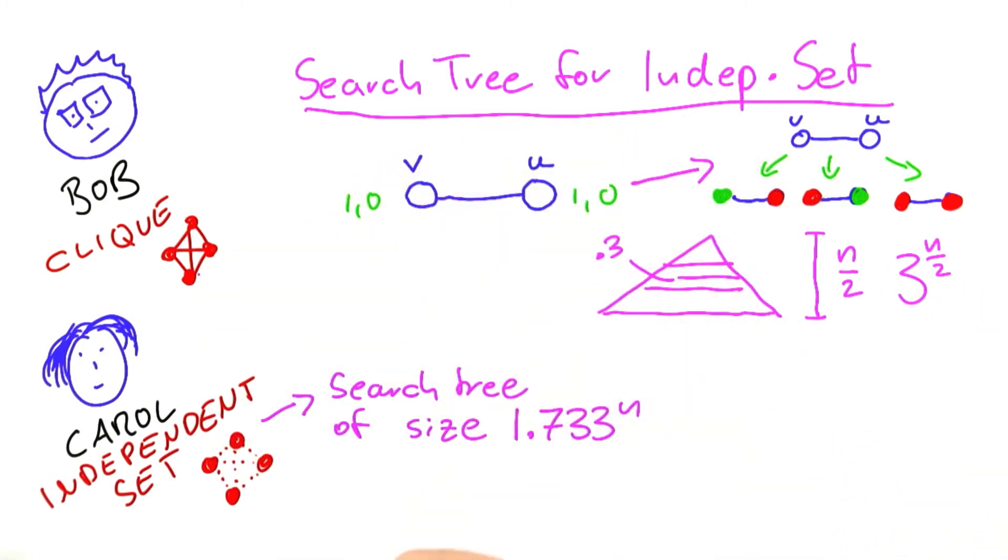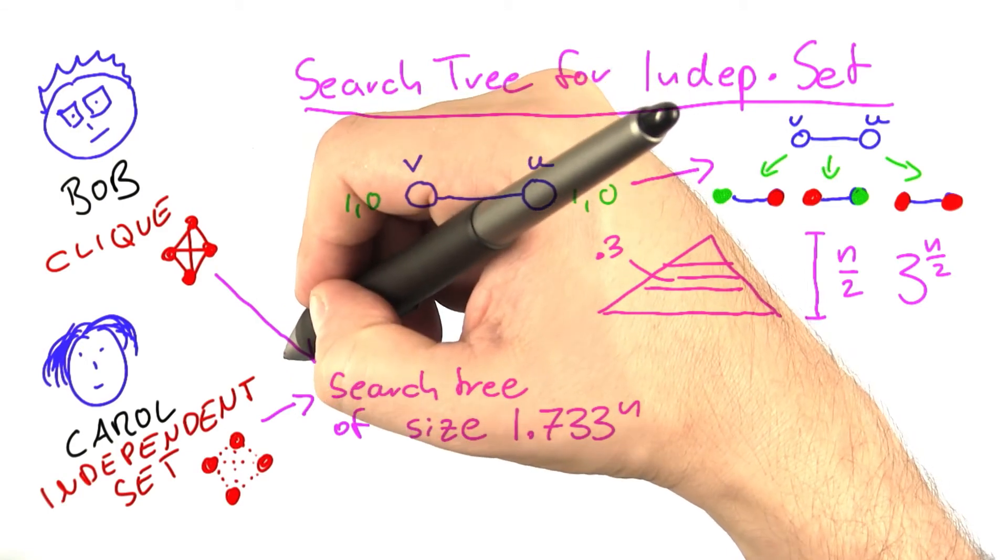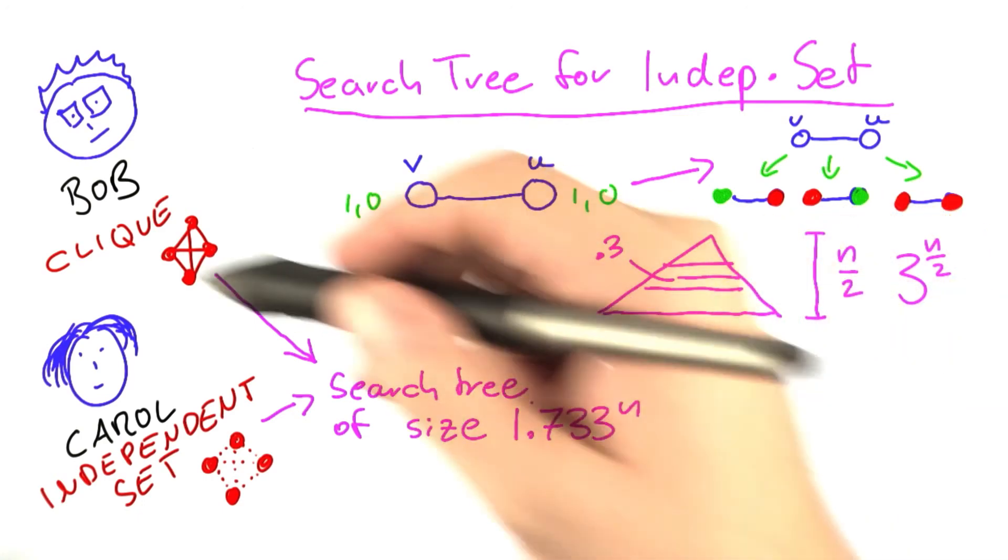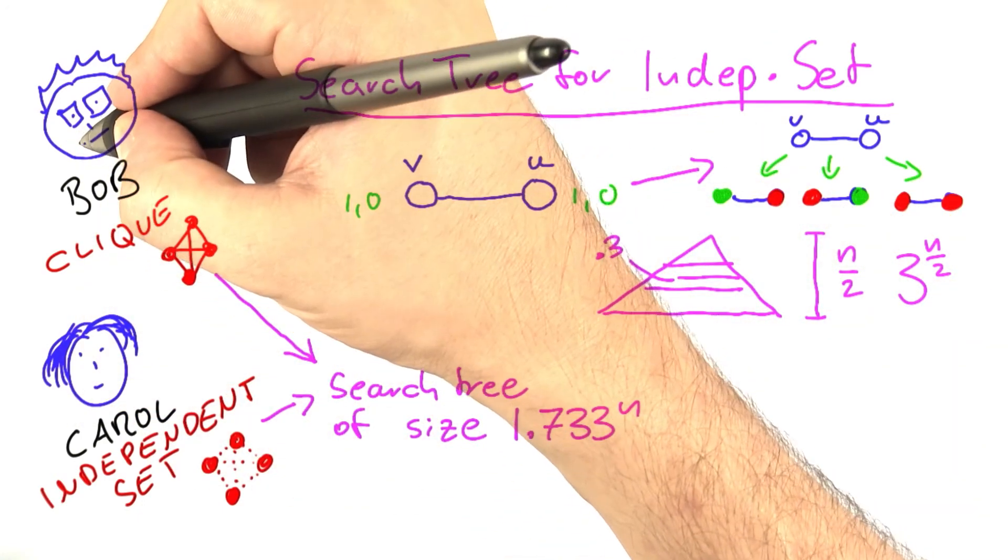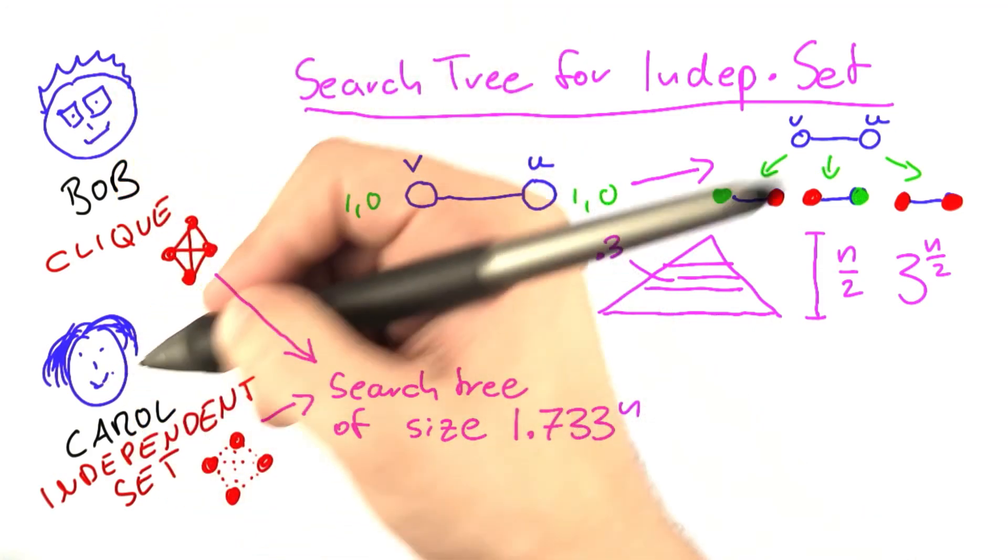And because independent set and clique are so similar, we just have to transform the network to the inverse network as you remember, hopefully from the first unit. We also have a search tree of size 1.733 to the power of n for clique. Just like Alice, no reason to be super happy. But Bob and Carol can be a little happier now.